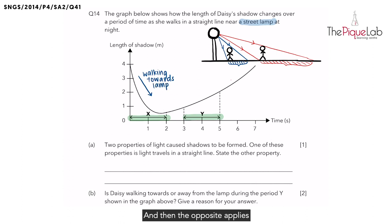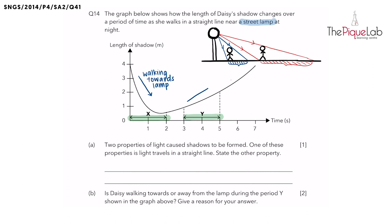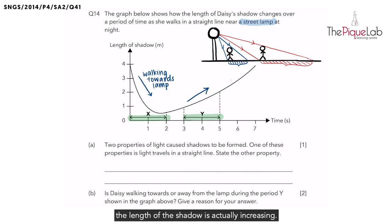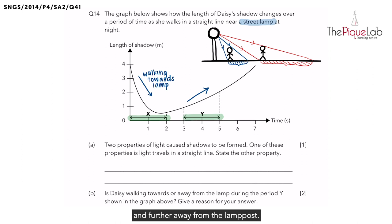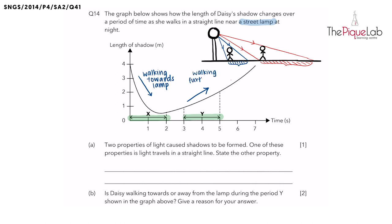The opposite applies for period Y. During period Y, we notice that the length of the shadow is actually increasing. So if the length of the shadow is increasing, that means she's actually walking further and further away from the lamp.